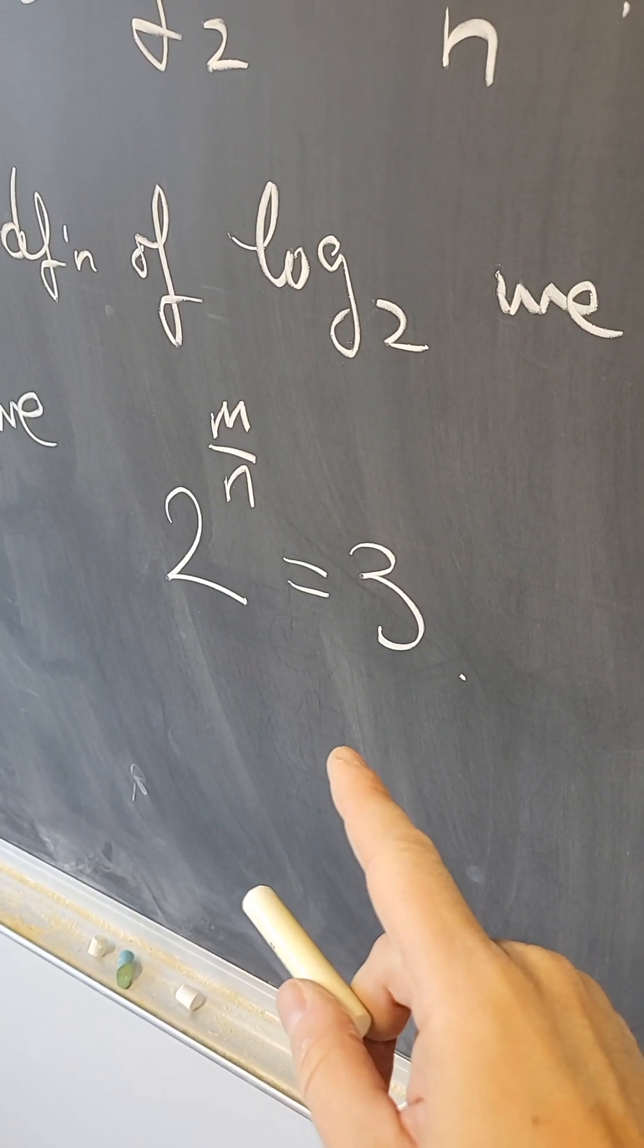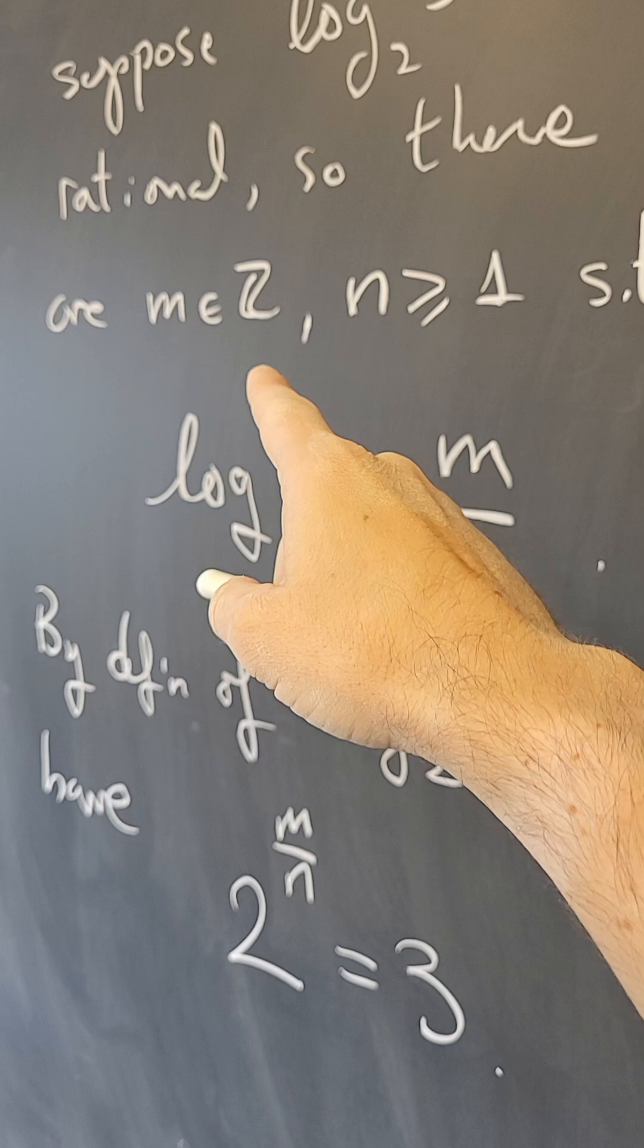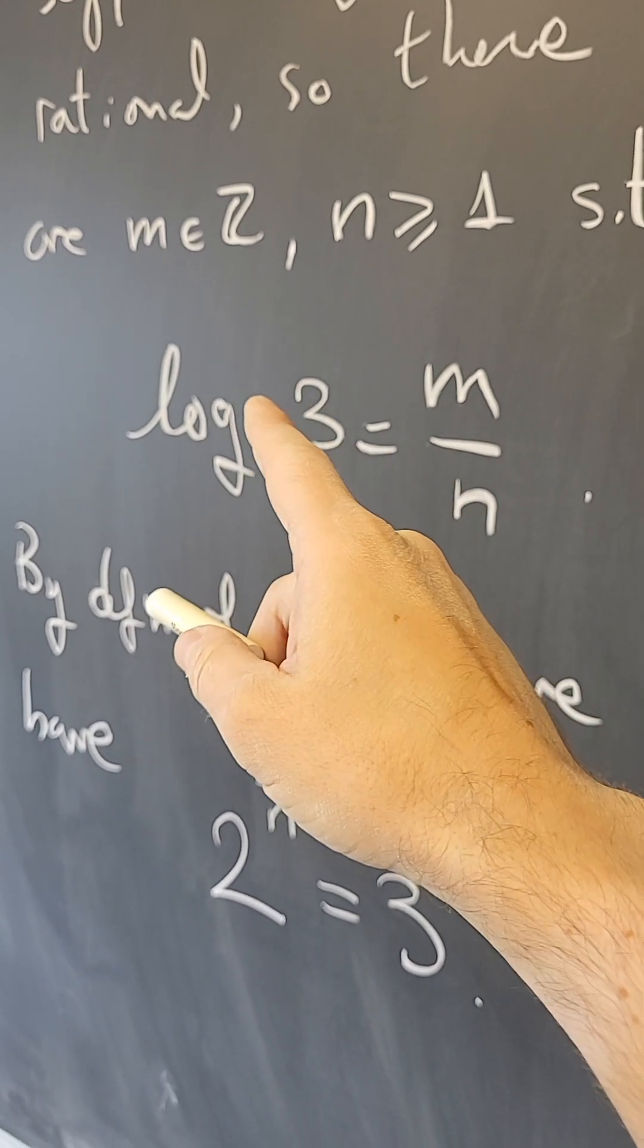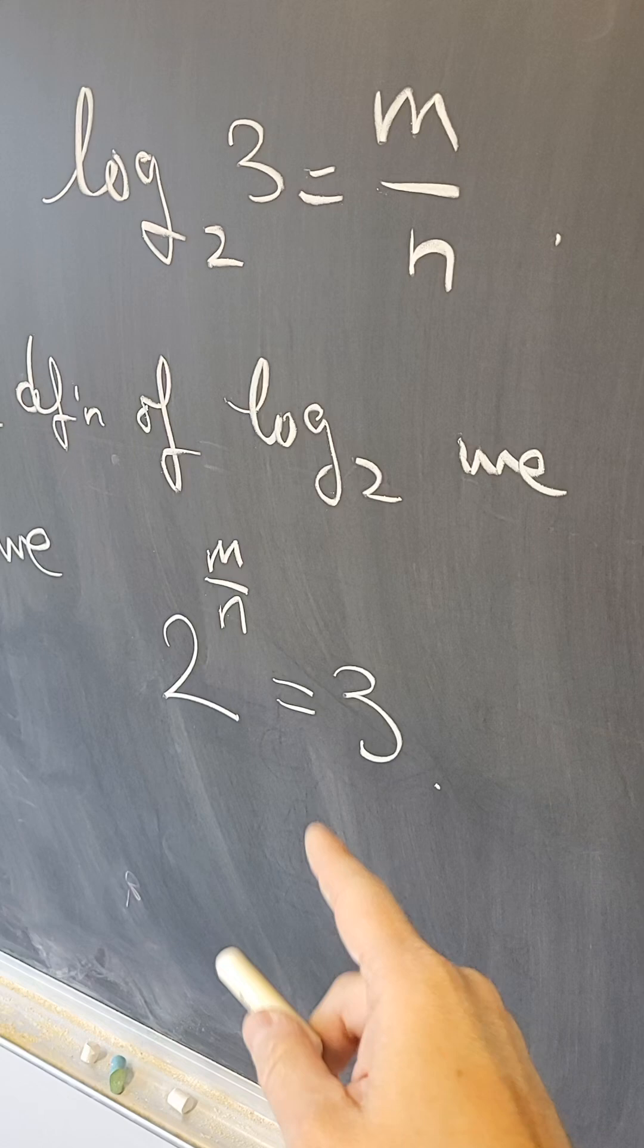Now we'll distinguish cases depending on the value of m. Since m is an integer, it could be negative, zero, or positive, and the argument is a bit different in each case.